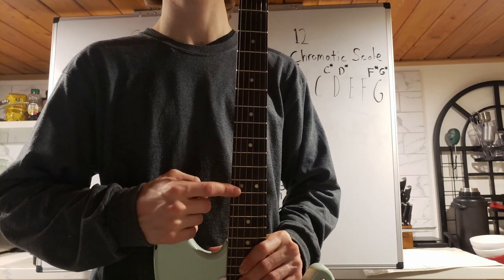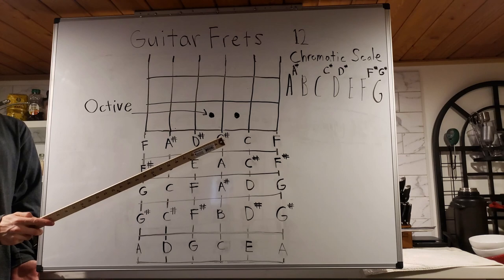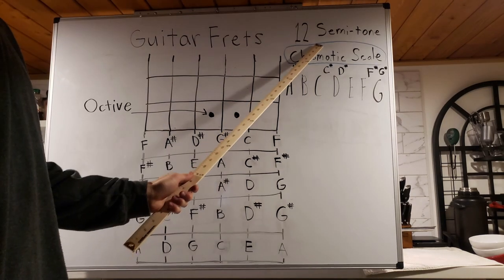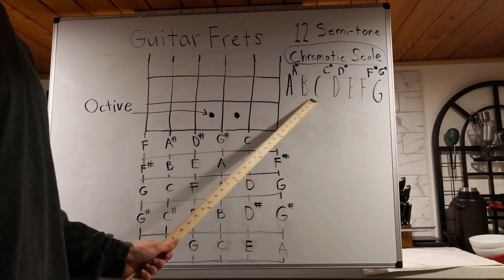And you'll notice that at this point, it'll restart. And that's because your 12th fret, which now you just learned is your 12th semitone, is an octave. This 12 semitone scale is known as your chromatic scale. If you count all these, it's 12.